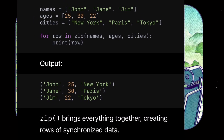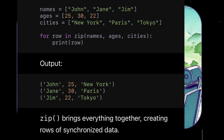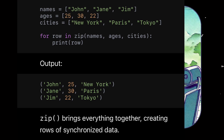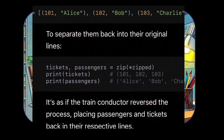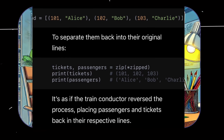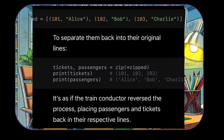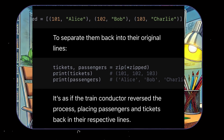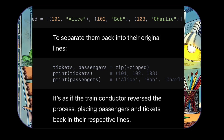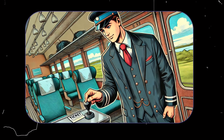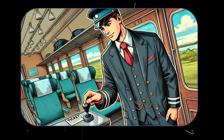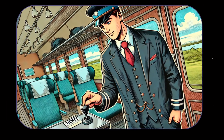But the magic doesn't stop there — you can even unzip data using Zip. Imagine you've already zipped up your passengers and tickets: zipped = [(101, 'Alice'), (102, 'Bob')]. To separate them back into their original lines: tickets, passengers = zip(*zipped). print(tickets) gives (101,) and print(passengers) gives ('Alice', 'Bob', 'Charlie'). It's as if the train conductor reversed the process, placing passengers and tickets back in their respective lines.